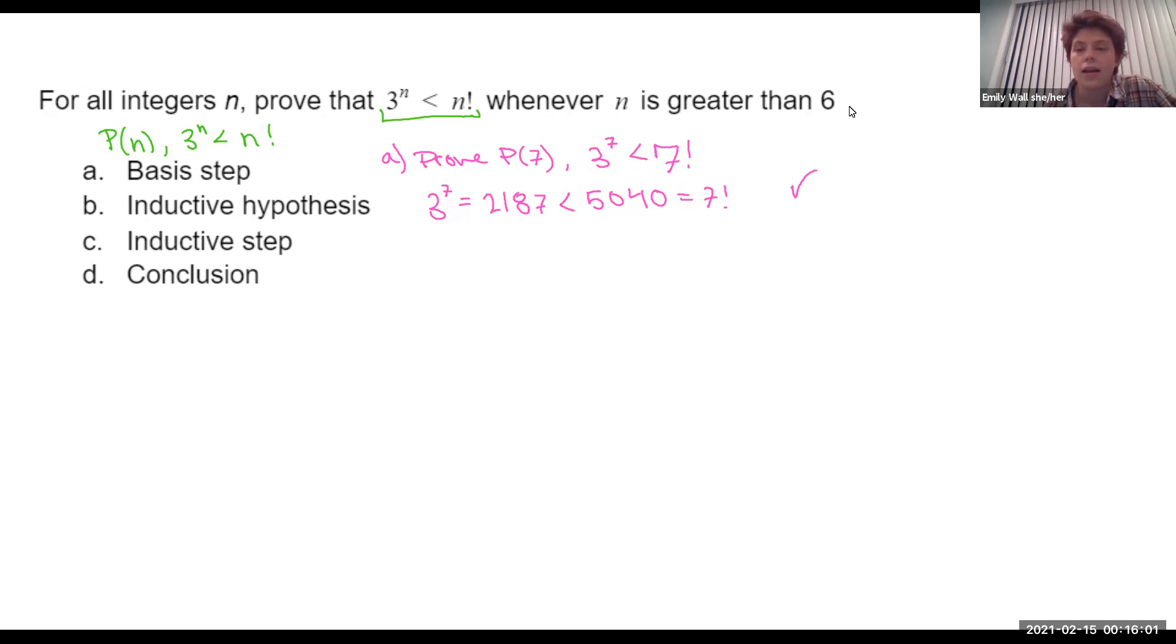Next we move on to the inductive hypothesis. Just going to assume P(k) for some integer k that's bigger than 6. That was a mouthful. I also always write out what P(k) means in this step. I guess you don't have to, but we're going to use this assumption in our proof. We didn't assume this for no reason. So it's nice to write out what this statement is because it's a tool we're going to use later.